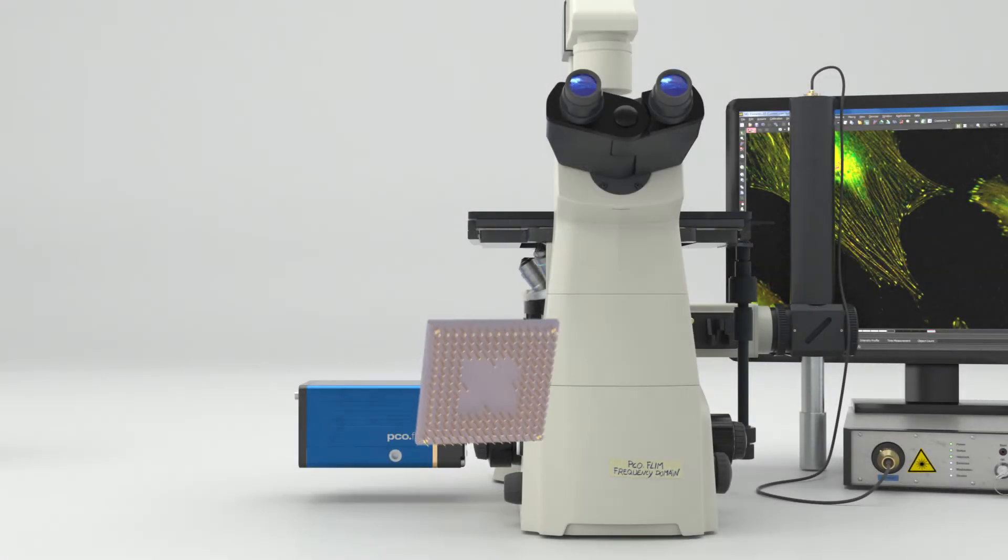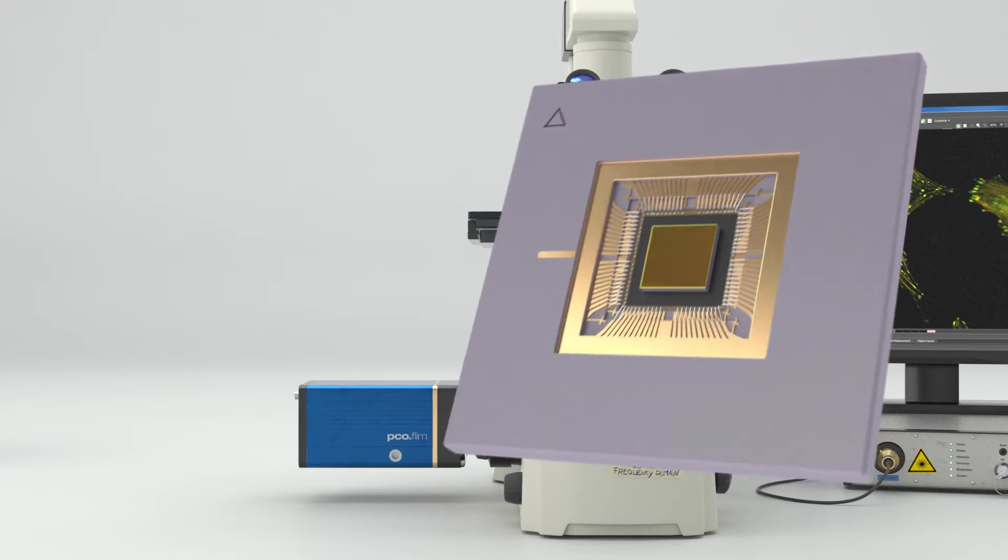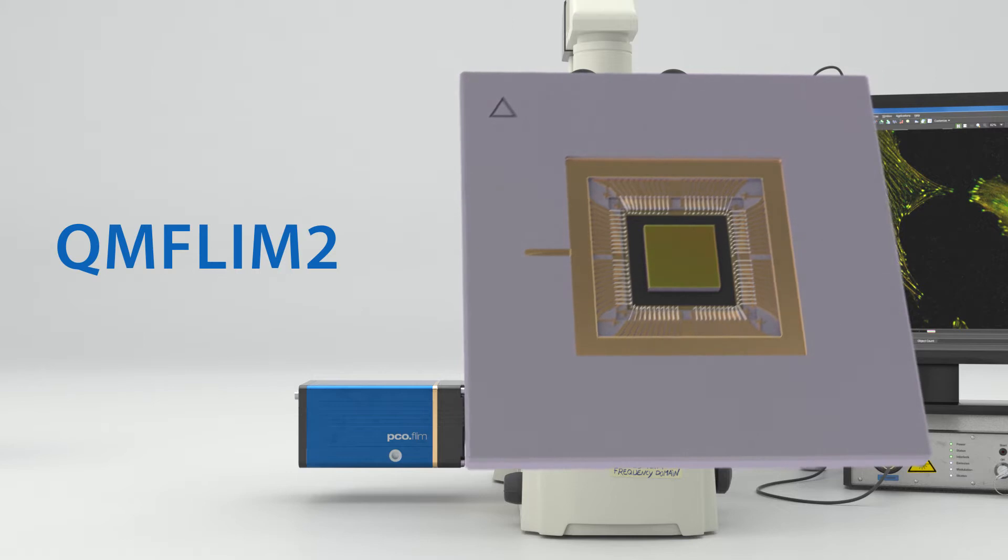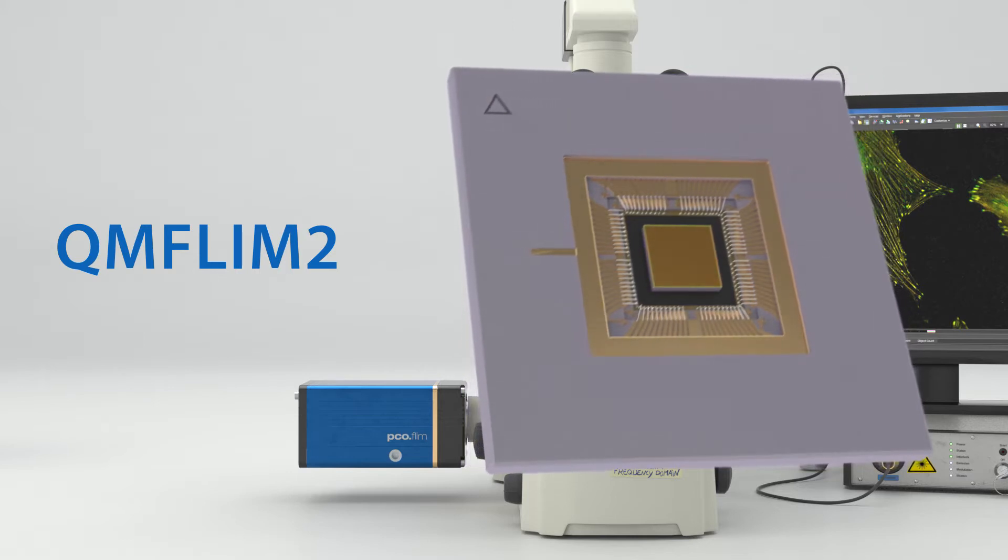By the development of a novel, fast, modulatable CMOS image sensor, the QM-FLIM-2, the so-called frequency domain method became more attractive.